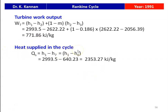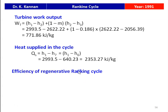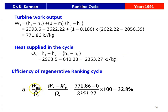Heat supplied Q = H1 - H7 = H1 - H6 (since pump work is neglected, H6 = H7) = 2993.5 - 640.23 = 2353.27 kJ/kg. Cycle efficiency η = (WT - WP) / QS = (771.86 - 0) / 2353.27 × 100 = 32.8 percent.